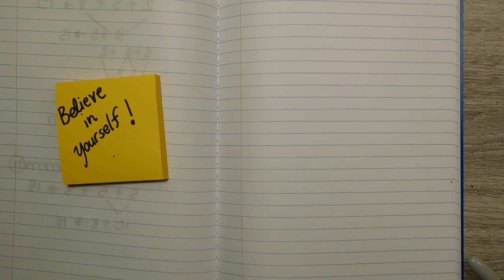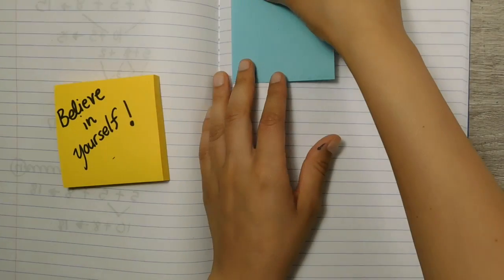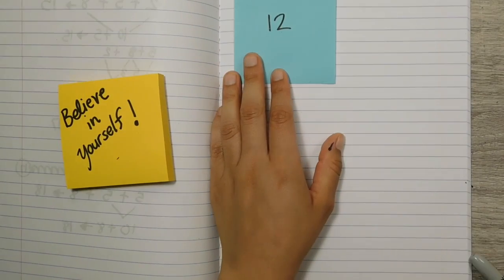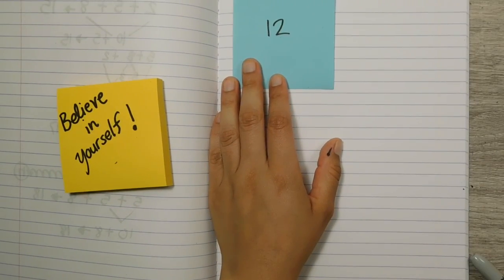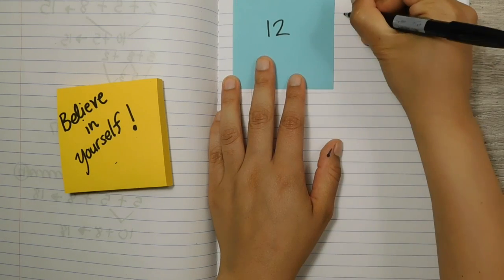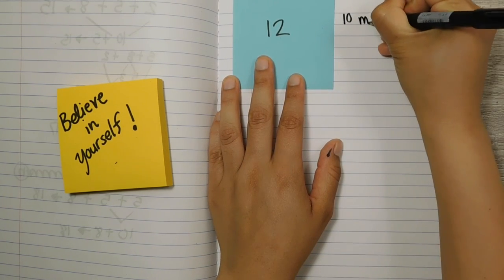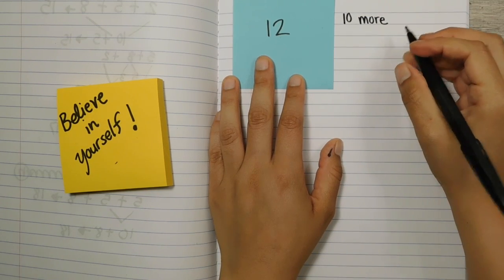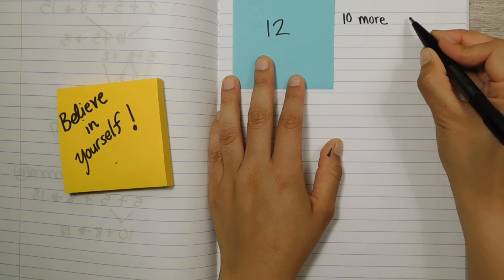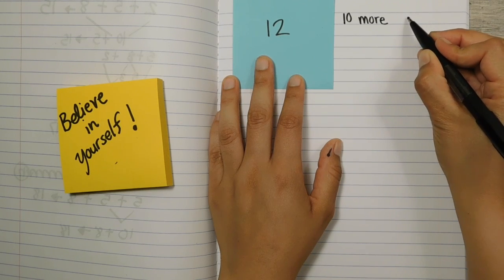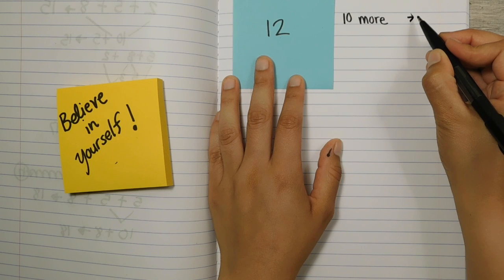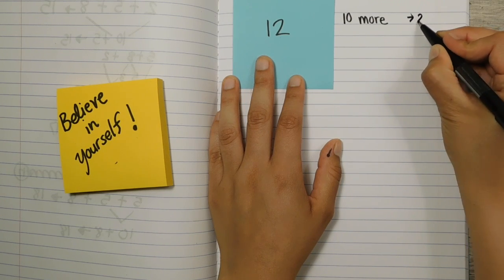So we're going to do that again today and the first number we're going to practice with is the number 12. Ready? So think with the number 12, what would be 10 more? 10 more. So what would be 10 more mathematicians? What is it? 22.